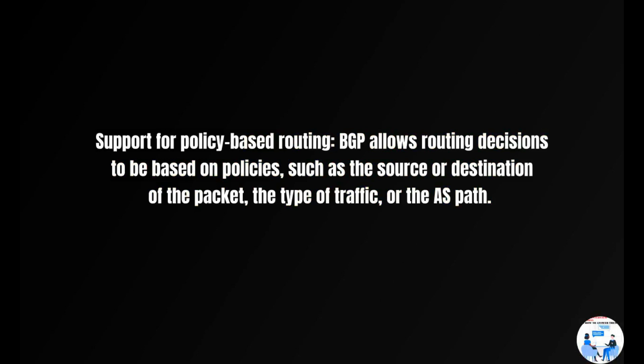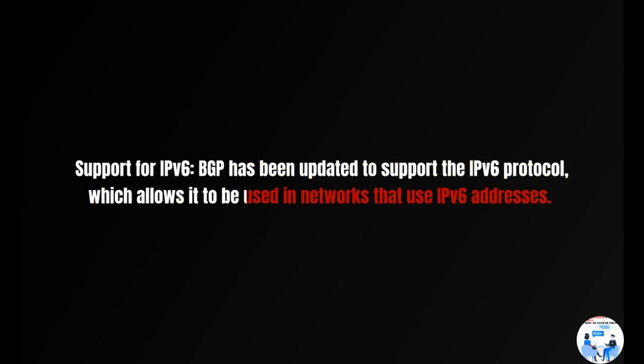Support for policy-based routing: BGP allows routing decisions to be based on policies, such as the source or destination of the packet, the type of traffic, or the AS path. Support for IPv6: BGP has been updated to support the IPv6 protocol, which allows it to be used in networks that use IPv6 addresses.